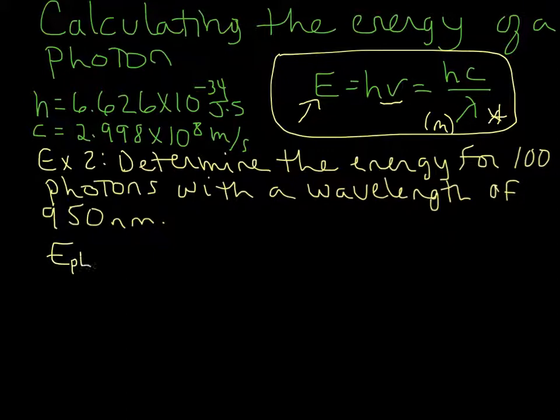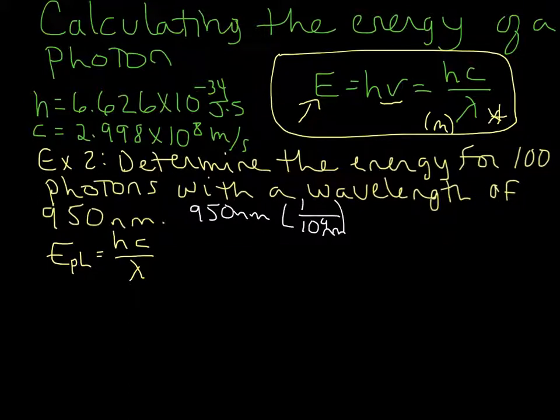So the energy of our one photon is going to be equal to hc over lambda. And we remember that we have to convert nanometers to meters. So 950 nanometers, let's go ahead and convert that, 10 to the 9 nanometers, 1 meter.